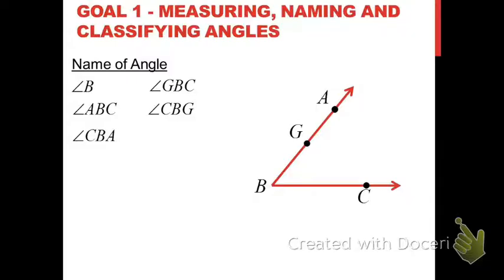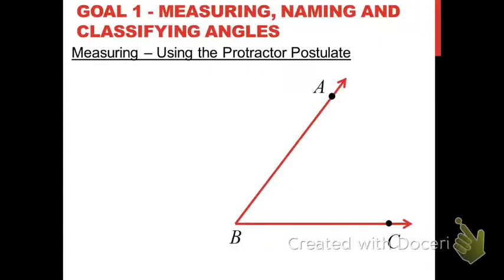The vertex is the most important point in naming an angle. Now we're going to go from naming to measuring angles. You probably know that you measure an angle in degrees. What I want to do here is show you how you would measure an angle with your protractor, and I'm leading up to using what is called the protractor postulate.